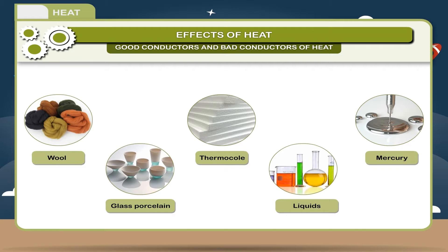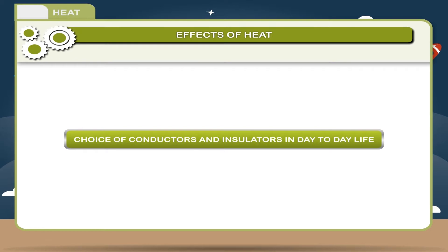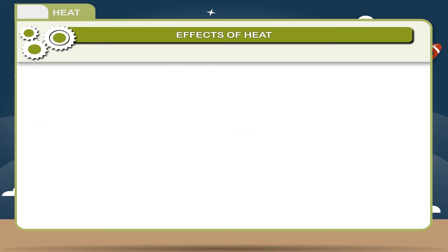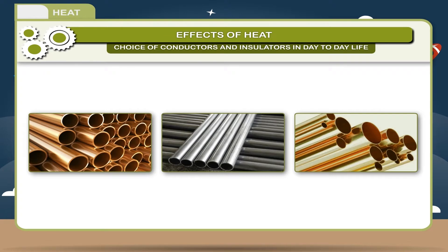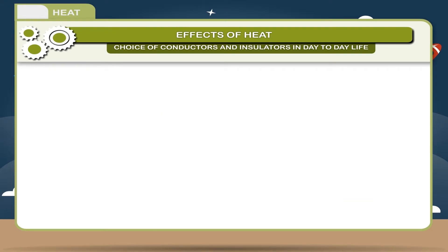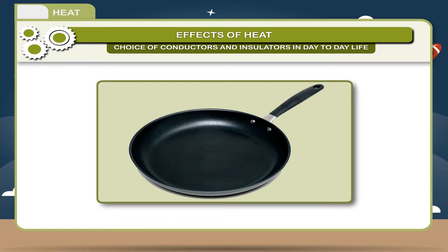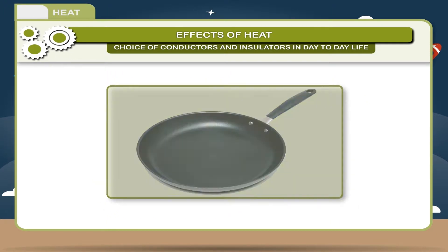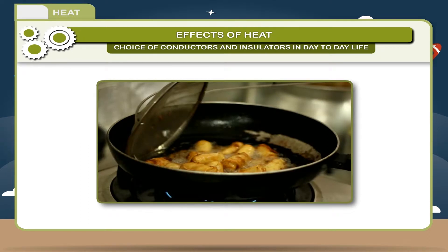Wood, water, air, cork, paper, wool, glass, porcelain, and thermocol are bad or poor conductors of heat. All liquids other than mercury and gases are bad conductors of heat. Good conductors such as metals and alloys — copper, aluminium, brass, etc. — are used to make cooking utensils as they cook food quickly and efficiently because they allow heat to conduct easily from the flame to the food inside.